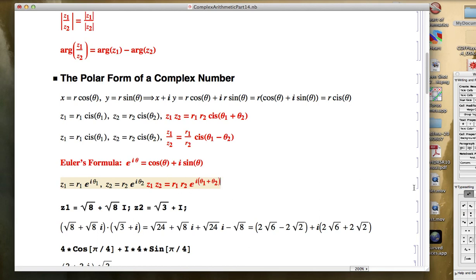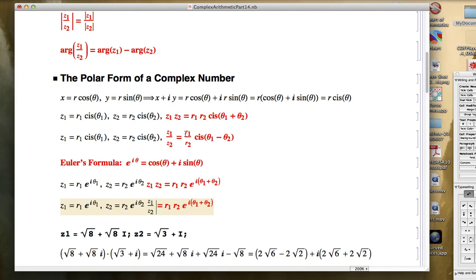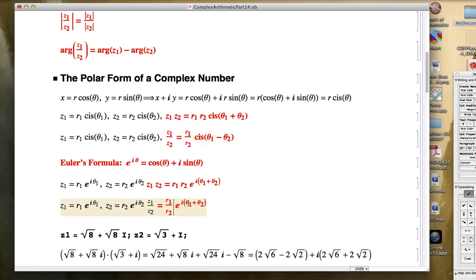And for quotients, z1 divided by z2 is the division of the moduli and a subtraction of the arguments.